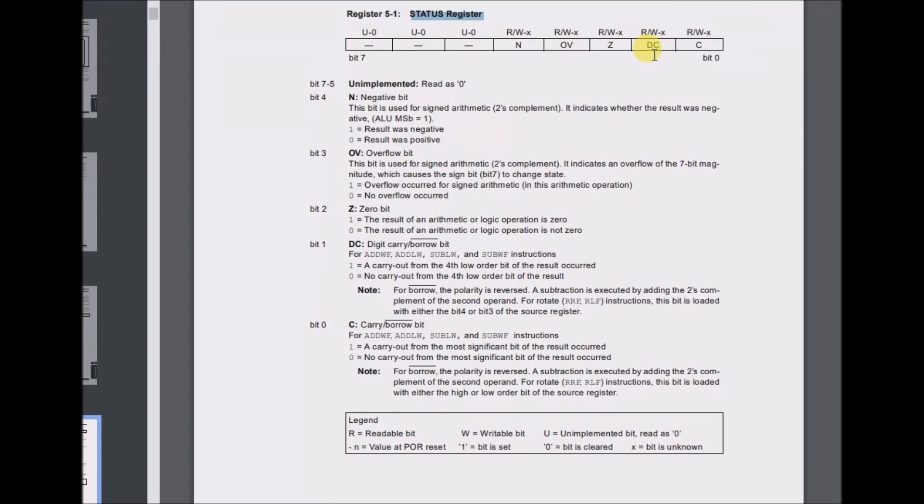For rotate RRF, RLF instructions, this bit is loaded with either bit 4 or bit 3 of the source register. Bit 0, C, carry/borrow bit. For add WF, add LW, sub LW, and sub WF instructions, 1 equals a carry-out from the most significant bit occurred. 0 equals no carry-out occurred. Note: for borrow, the polarity is reversed. A subtraction is executed by adding the 2's complement of the second operand. For rotate instructions, the bit is loaded with either the high or low-order bit of the source register.